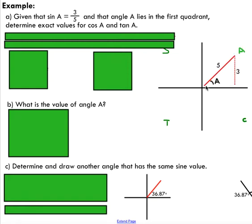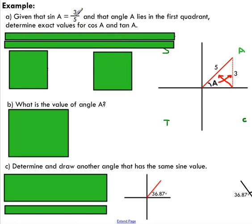So if I draw my terminal arm — that's this red line here — you can picture it rotating and stopping in this position, that's the angle A I'm referring to. I know that if I'm taking the sine of that angle and I have 3 over 5 for my sine ratio, the opposite side has to be 3 and the hypotenuse should be 5. That's what this ratio tells me — the sine of A is 3 over 5.